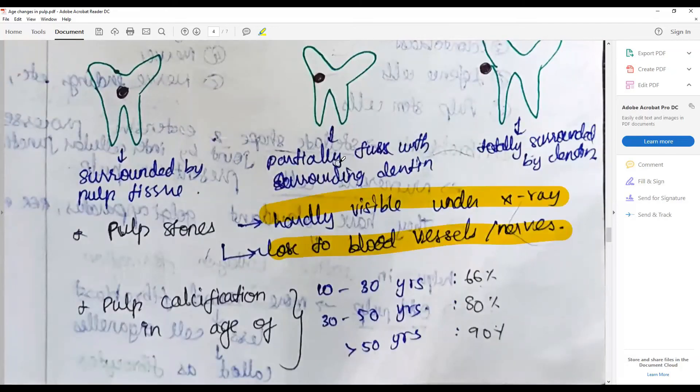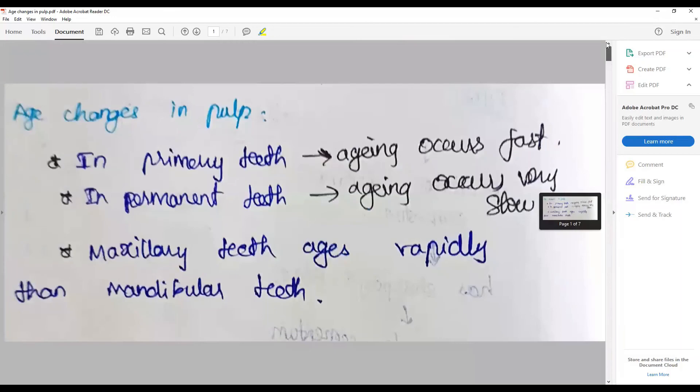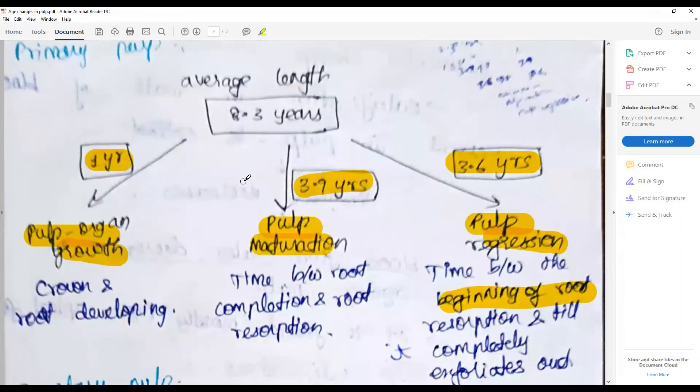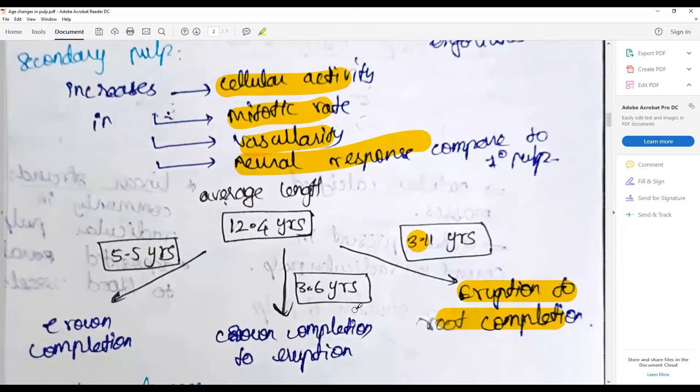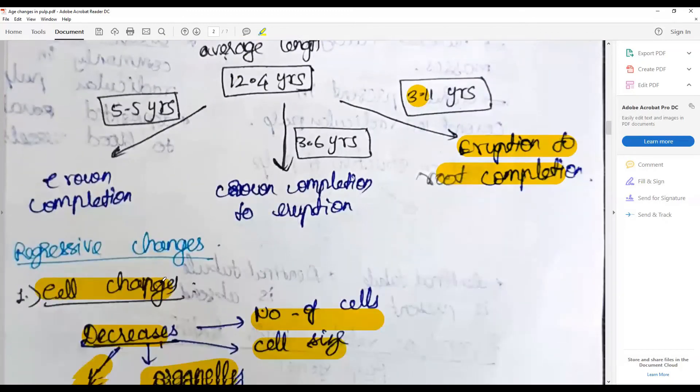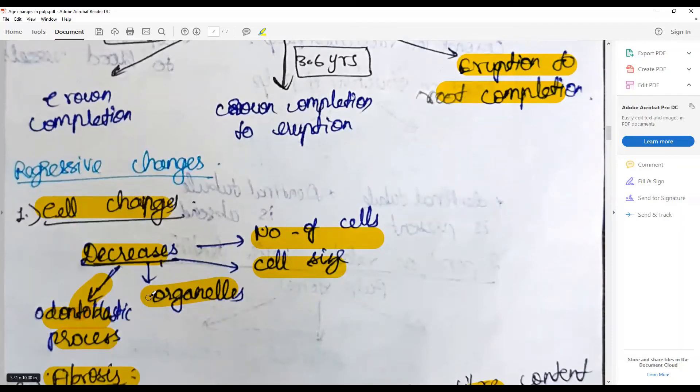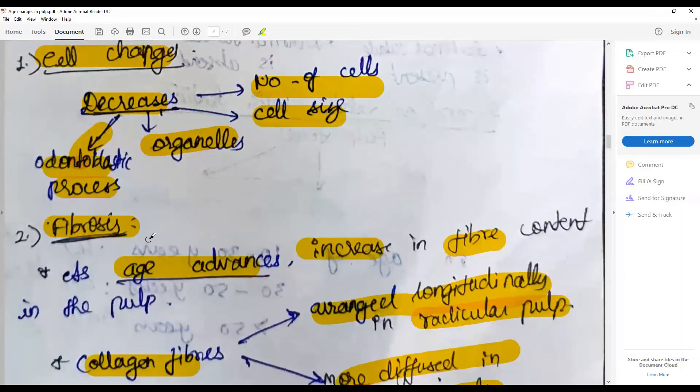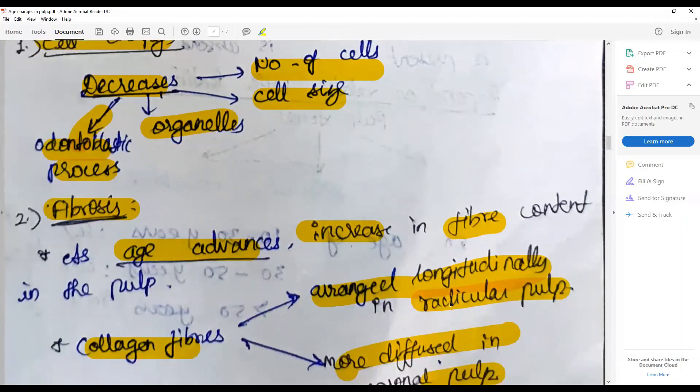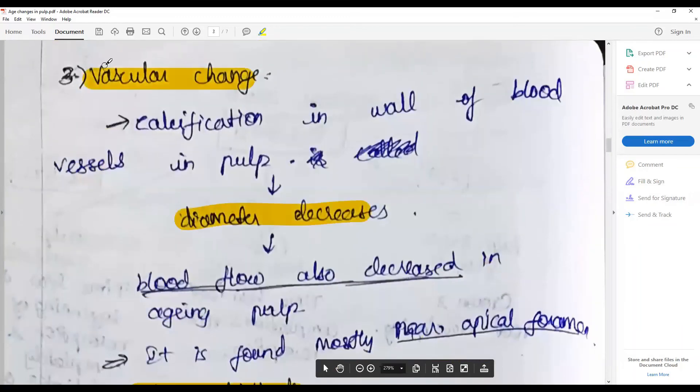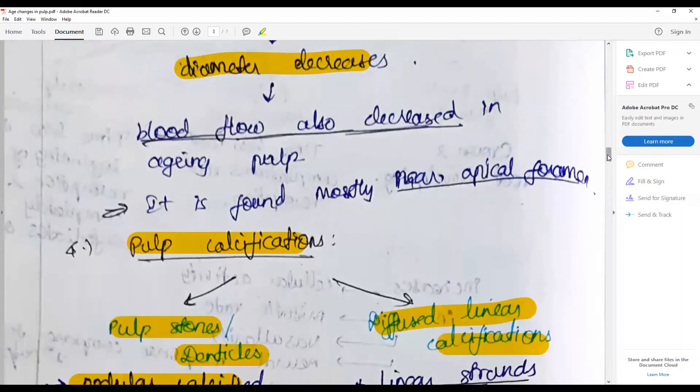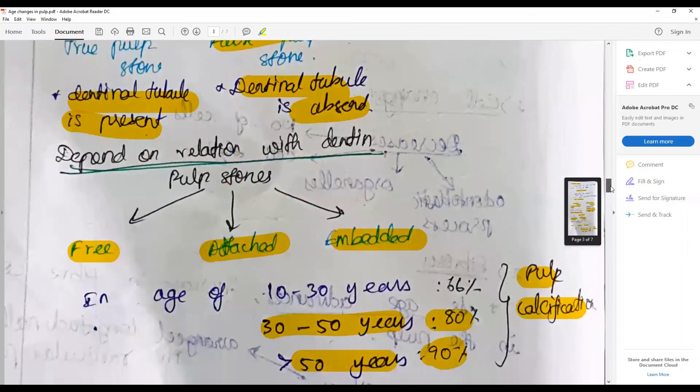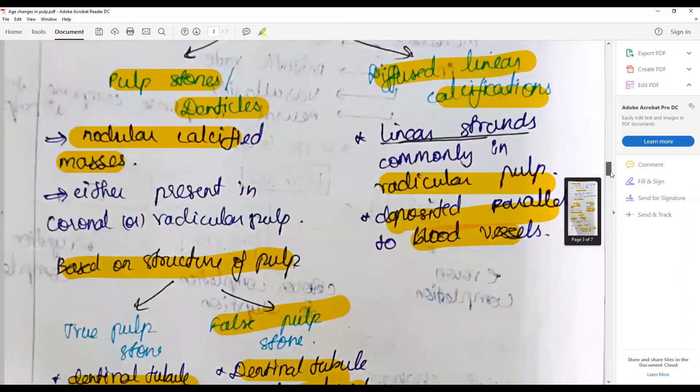With that we come to an end on the discussion on the pulp stones and age changes in the pulp: age changes in primary teeth and permanent teeth, the average length of primary and secondary pulp till formation, then the age changes: cellular changes, how it decreases in number of cells, cell size, organelles, odontoblastic process. Fibrosis: as age advances, increase in the fiber content and decrease in the cellular content, how the collagen fibers are laid down. Vascular changes, how calcifications alter the blood flow, and pulp calcification with regards to the dentinal pulpal stones or denticles.